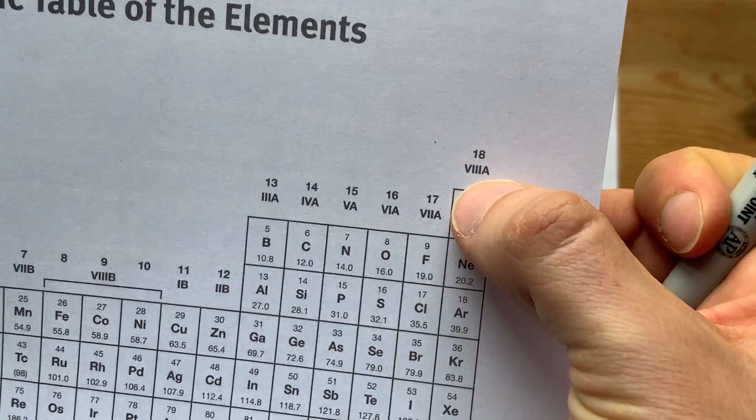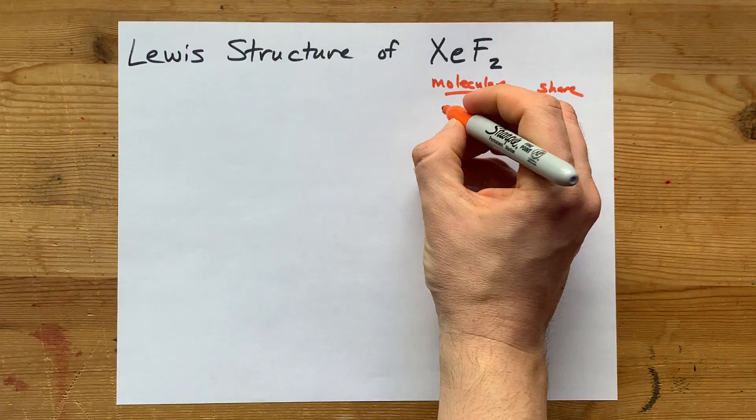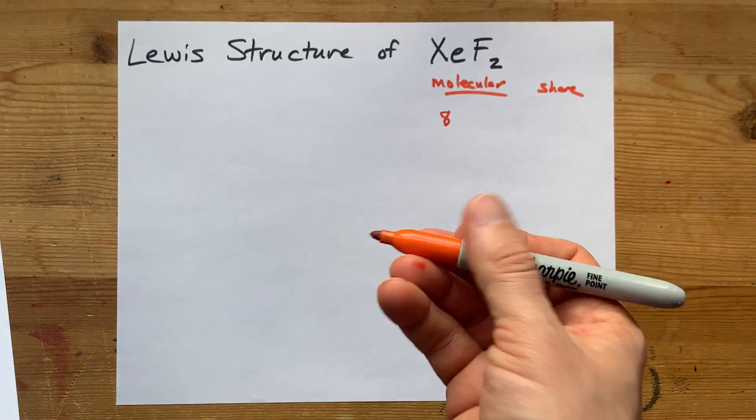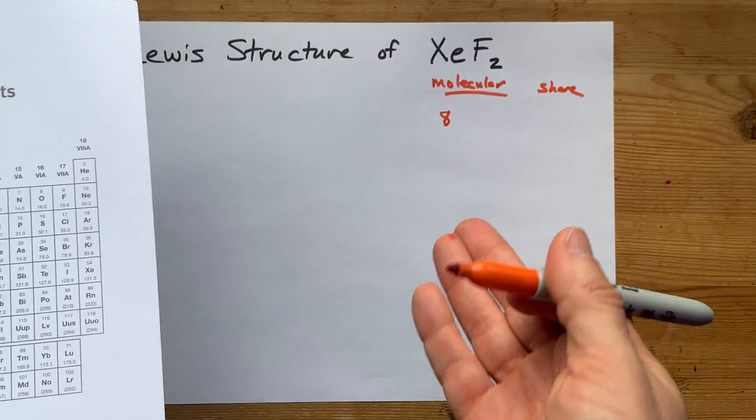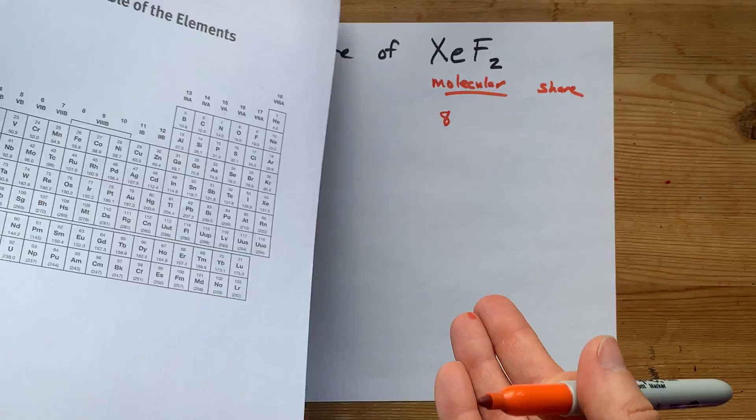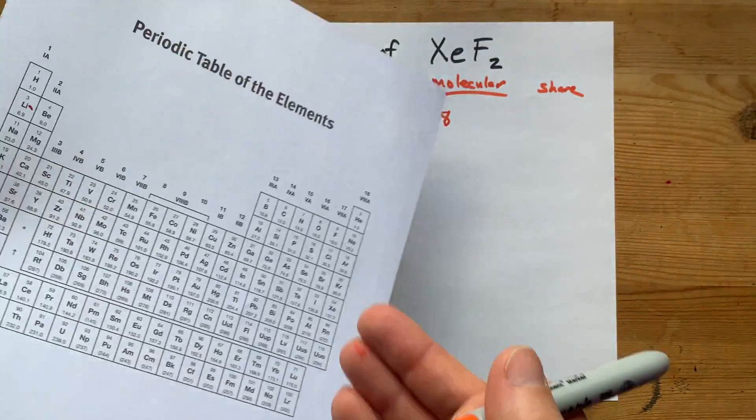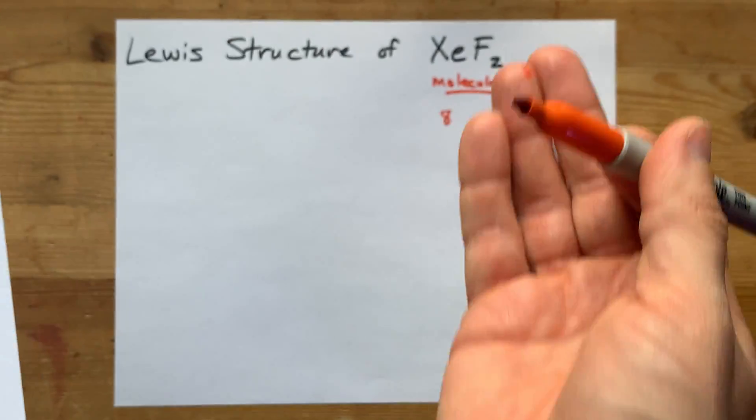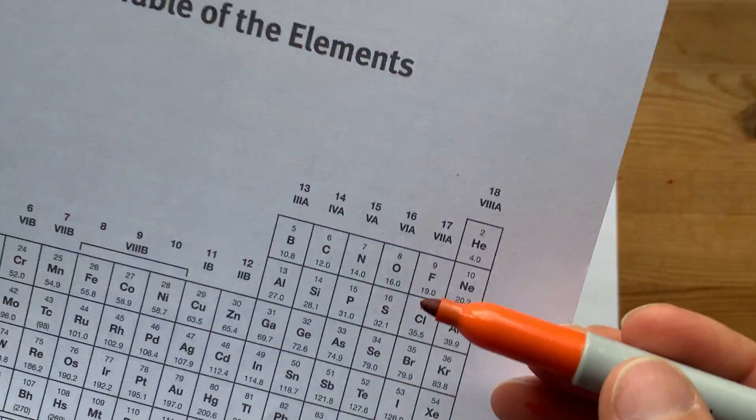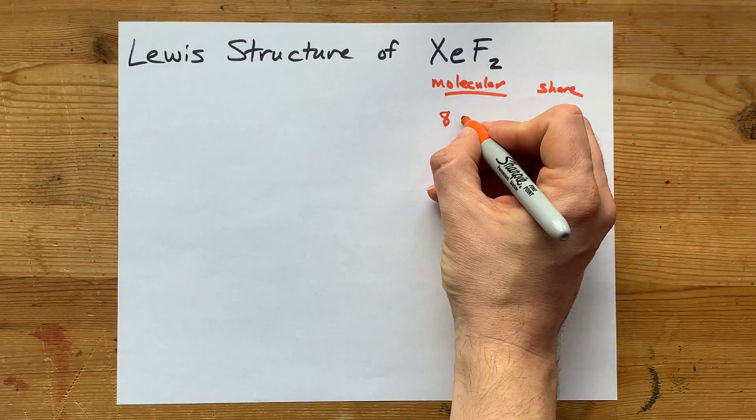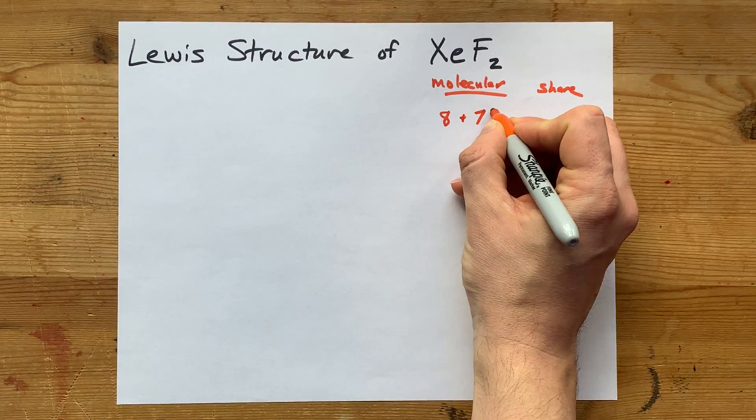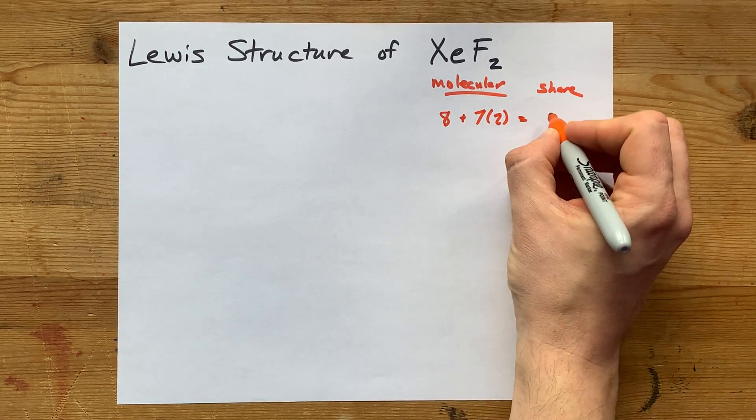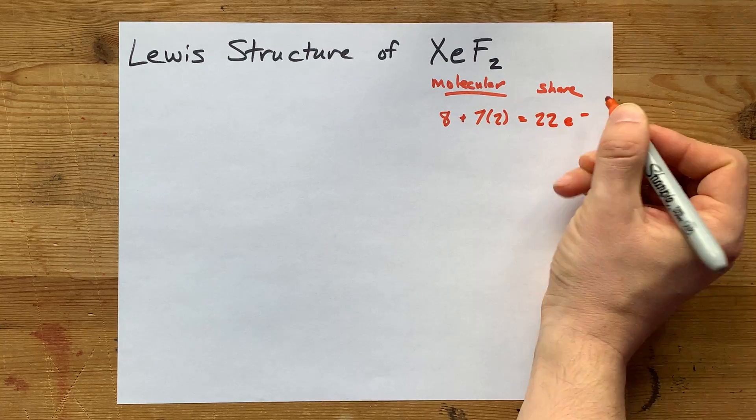To draw the Lewis structure for a molecular compound, I'm going to count the total number of valence electrons. And then I'm going to do a few more steps, which I'll walk you through. First of all, xenon in group 18 brings eight valence electrons with it.